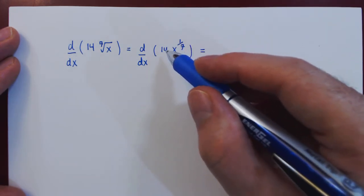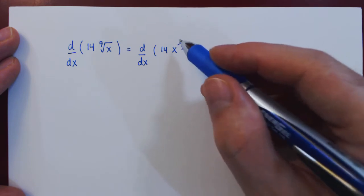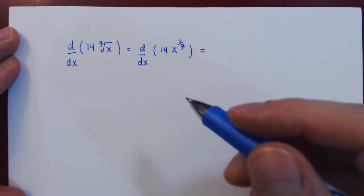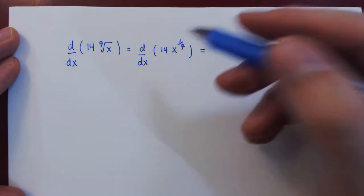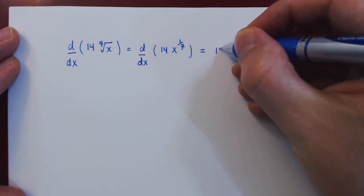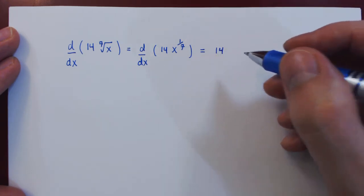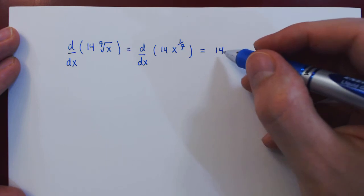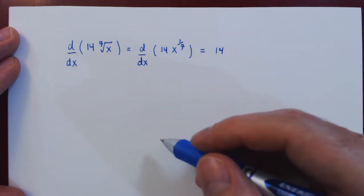So we have a constant multiple times this power of x. The constant multiple rule says that the constant multiple simply remains as it is, and then we multiply the constant multiple by the derivative of the function.